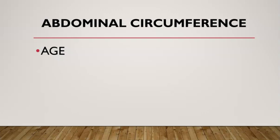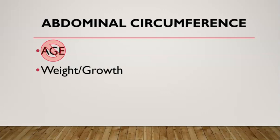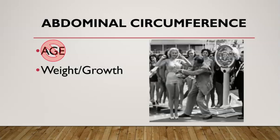Moving on to our third measurement: abdominal circumference. This measurement is going to be less useful in determining fetal age, but very helpful in determining fetal weight, especially as the pregnancy progresses. And that makes sense — measuring someone's waist isn't going to give us much information about their age, but it would give us some information helpful in determining more about their weight.